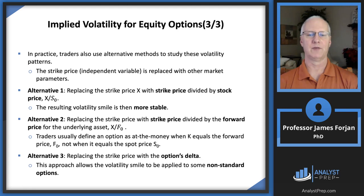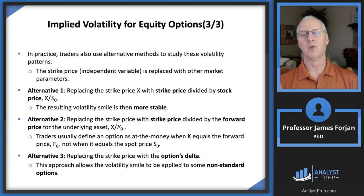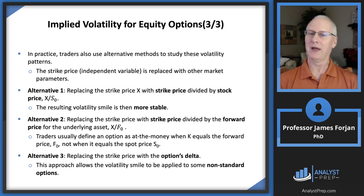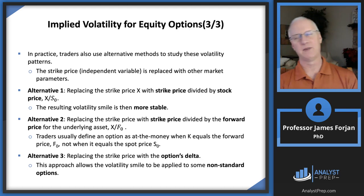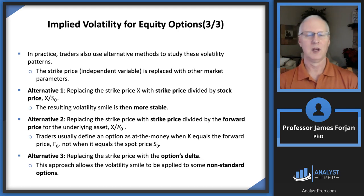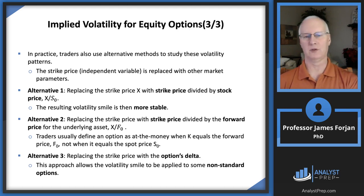The third alternative is replacing that strike price with the option's delta, which measures how much the call price changes when the stock price changes. One of the really awesome things about the Black-Scholes-Merton option pricing model is that the notation ND1 is a probability that also happens to be the option's delta, so you can easily use Black-Scholes-Merton to come up with that option delta.